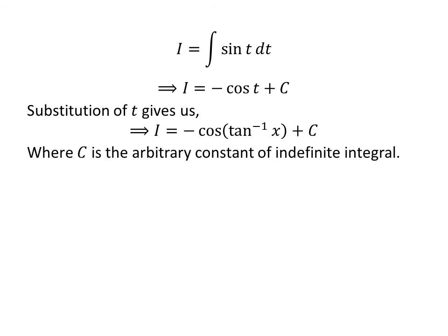Now we need to take back the expression in terms of x. For that, I have replaced t by arctangent of x which we had assumed earlier. So I is equal to minus cosine of arctangent of x plus capital C.